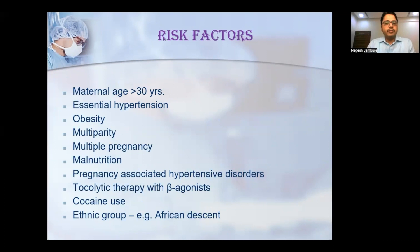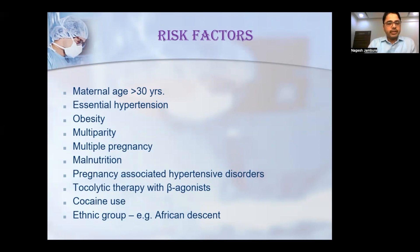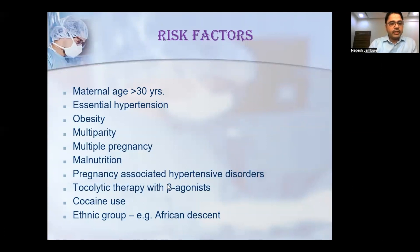Risk factors of peripartum cardiomyopathy are divided into cardiovascular risk factors — maternal age more than 30 years, essential hypertension, obesity, and diabetes — and other important factors including multiparity, multiple pregnancy, twin pregnancy, nutritional deficiency such as selenium and zinc deficiency, hypertensive disorders of pregnancy, cocaine use, and gastrointestinal conditions.